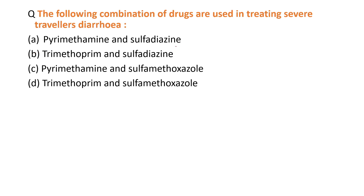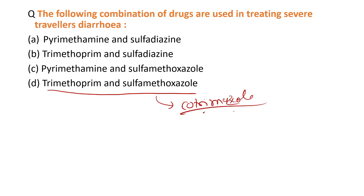The last MCQ: which combination of drugs is used in the treatment of severe traveler's diarrhea? We use a combination of trimethoprim and sulfamethoxazole. This was the last important MCQ regarding GPED 2019 Pharmacology. If you like this video, please share it with your friends, subscribe to the channel, and like this video. Thank you.